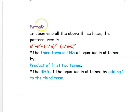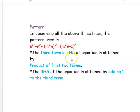Let us see what pattern we have observed from all three lines. If we take the first term as m² and the second term as n², then the third term is (m × n)², and that is the left-hand side. The right-hand side is (m × n + 1)². The third term is obtained by multiplication of the first two terms, and the right-hand side is obtained by adding 1 to the third term. With this pattern, we will find the missing digits.